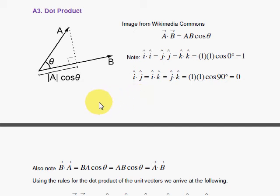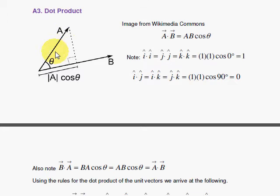Dr. Fizz with the dot product. The dot product maps two vectors into what we call a scalar. A scalar has no direction, it's just simply a magnitude. The formula is: you take vectors a and b that have some angle between the two, and you take the length of a and multiply it by the length of b, then multiply that combination with the cosine of the angle between the two vectors.